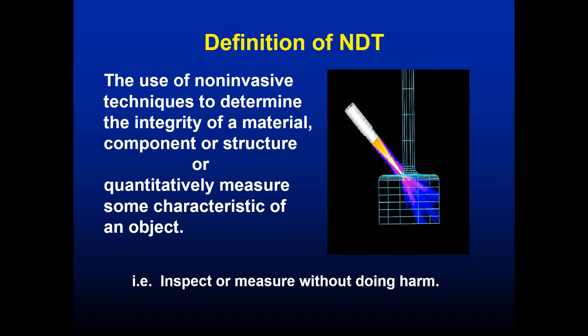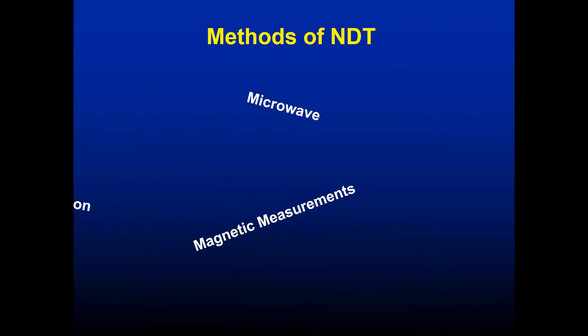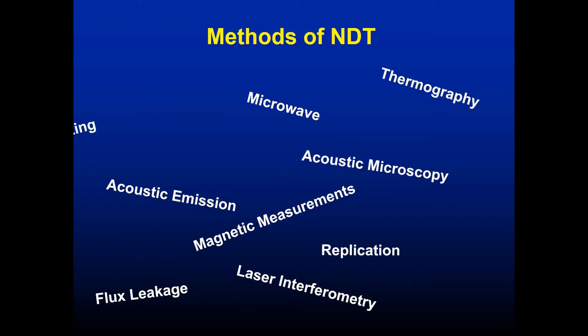You might be measuring some characteristic such as dimensions, conductivity, or heat treatment. For example, if you're heat treating steel you can verify it was done properly, without damaging the test piece. You can be testing in-service materials or things as they're being manufactured and still be able to sell it afterward. There are many different NDT methods — microwave testing, thermography, acoustic microscopy, acoustic emission, and more.